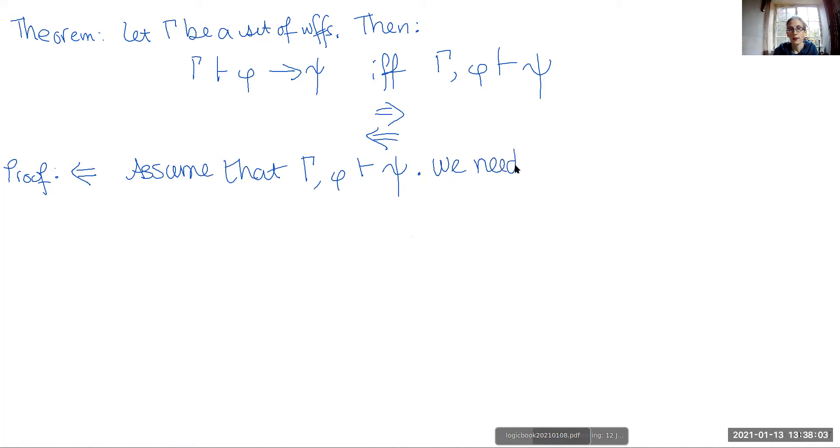We need to change this into a proof that doesn't have phi as an assumption so that the only assumptions it depends on are the formulas in gamma,